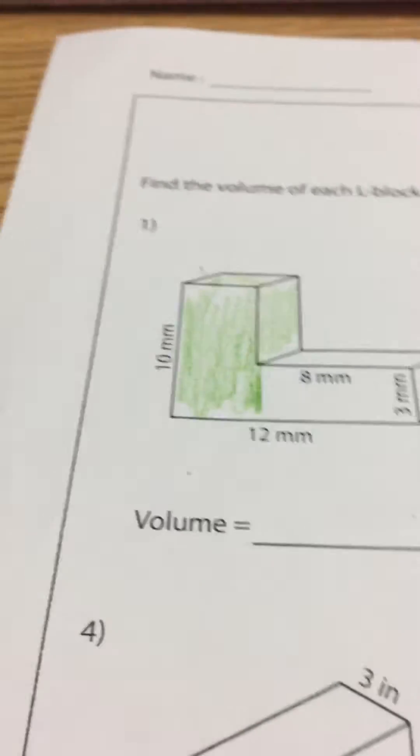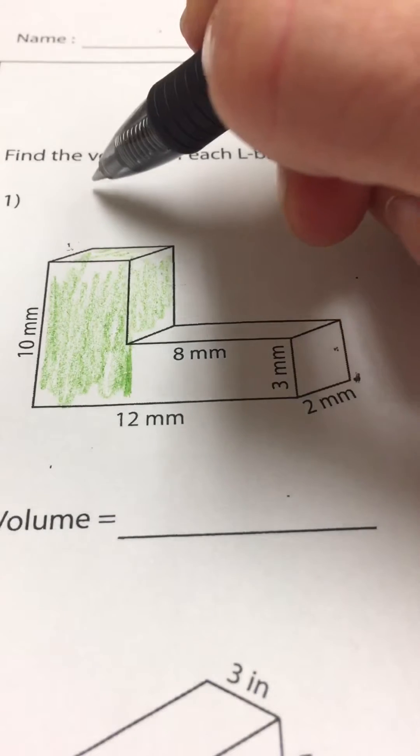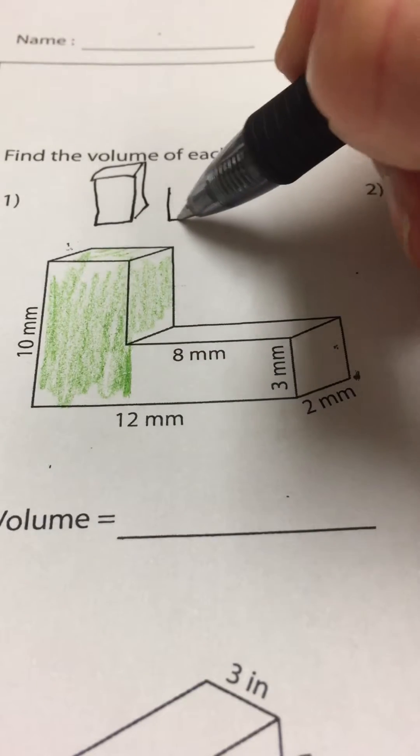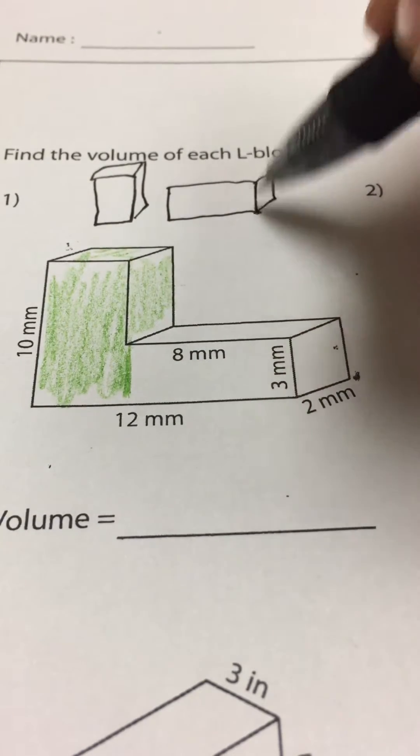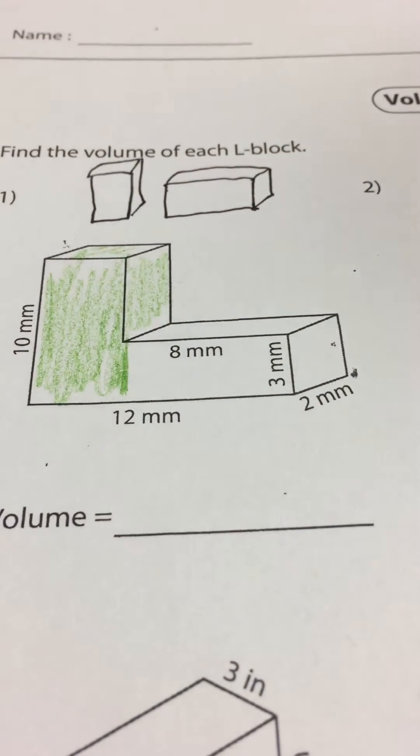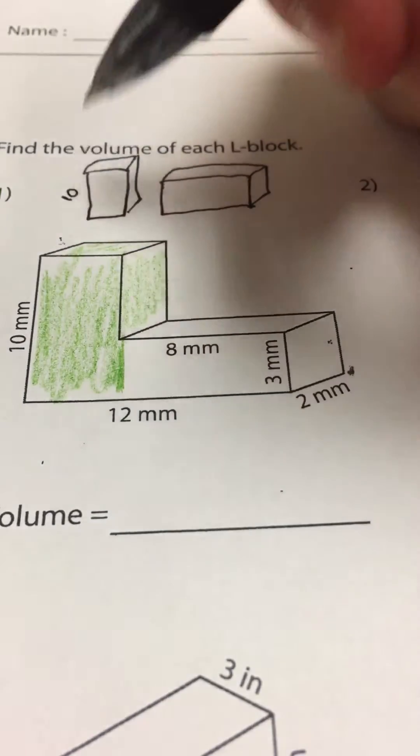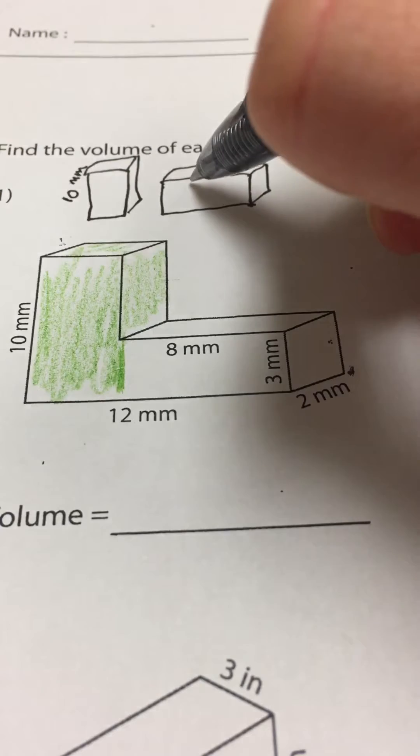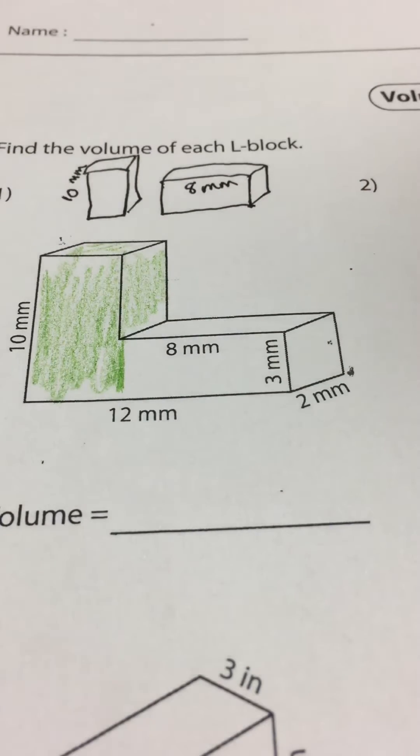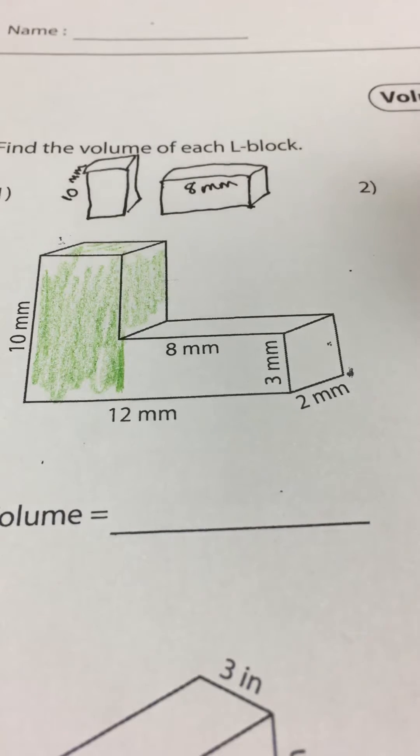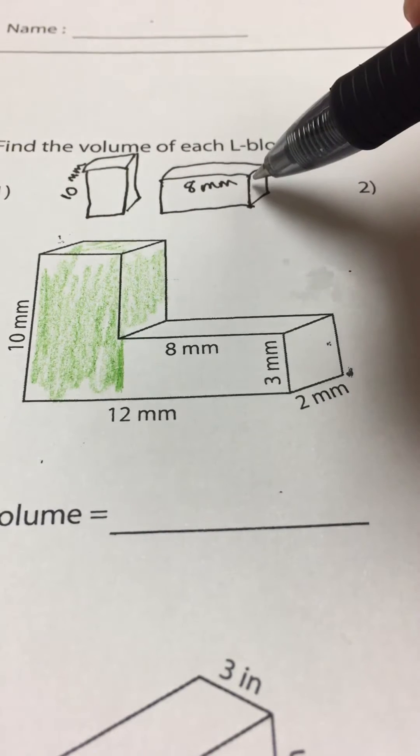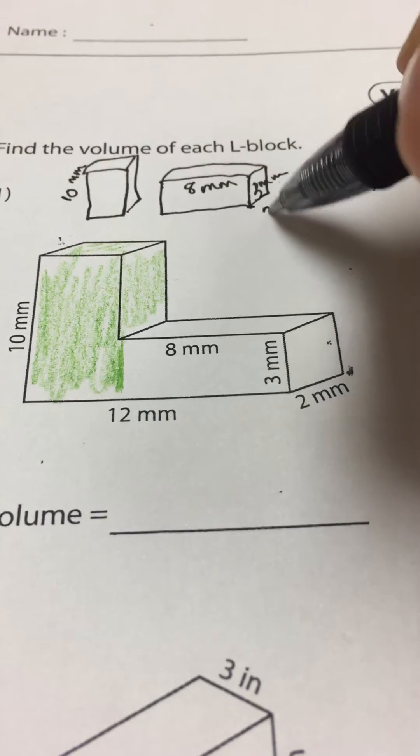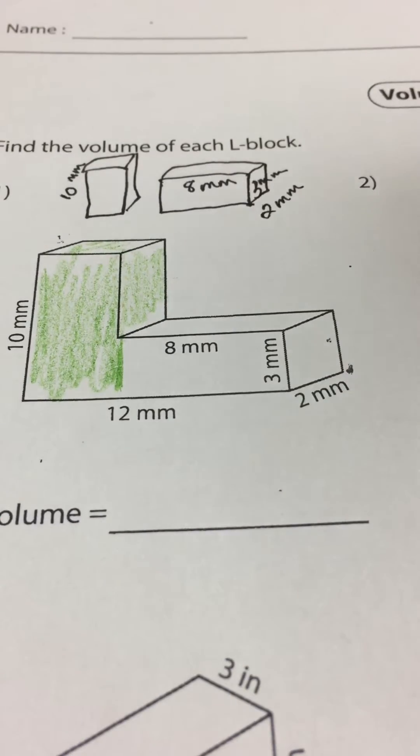So I have to redraw those pieces. I'm going to do it right here. I'm going to draw the longer piece right here and label. I know this is 10 millimeters. I know this piece right here is 8 millimeters. What else do I know? I know this is 3 millimeters high and 2 millimeters deep. This one was easy.